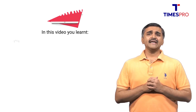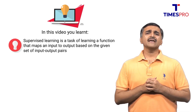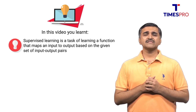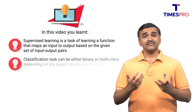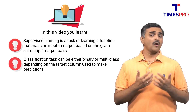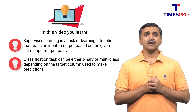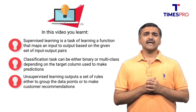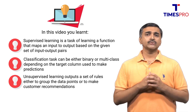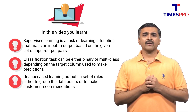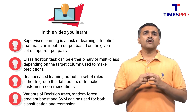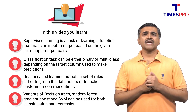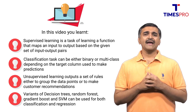Now let's summarize the key takeaways from this video. Supervised learning is a task of learning a function that maps an input to output based on the given set of input-output pairs. Classification tasks can be either binary or multi-class depending on the target column used to make predictions. Unsupervised learning outputs a set of rules either to group the data points or to make recommendations. Variants of decision trees, random forest, gradient boost, and support vector machines can be used for both classification and regression.